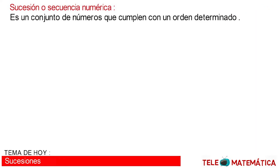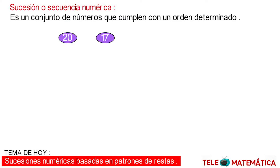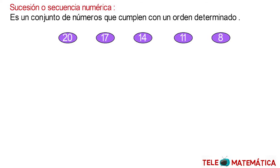Very good, let's see an example. We have the numbers 20, 17, 14, 11, and 8 respectively. This list of elements is called a succession or sequence.